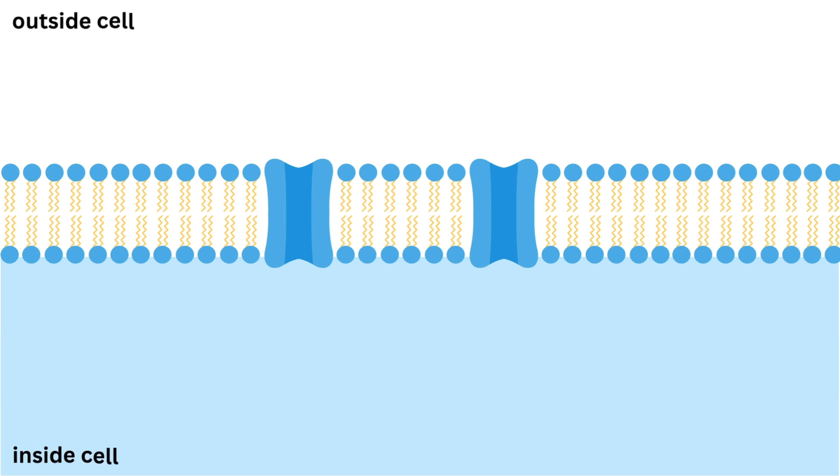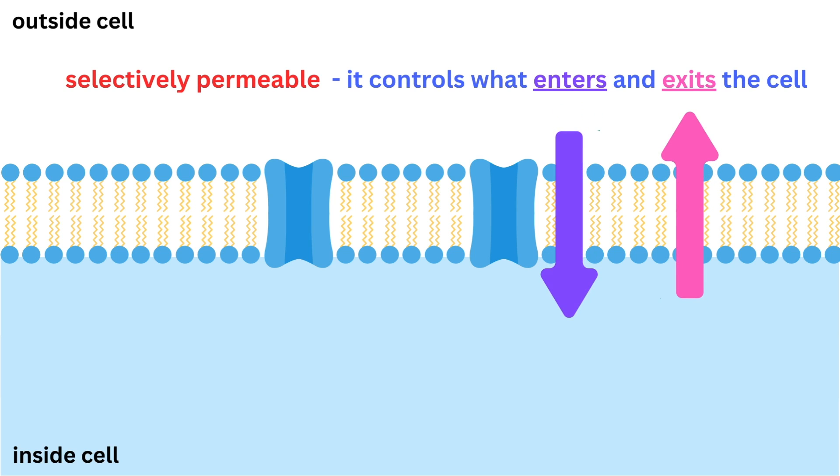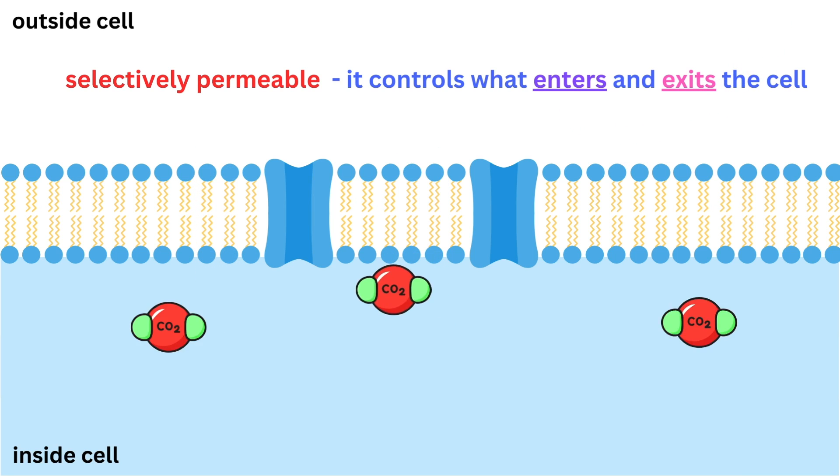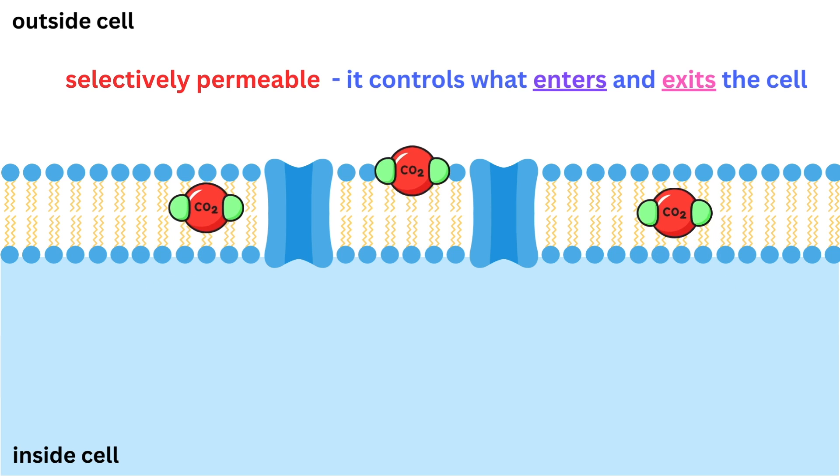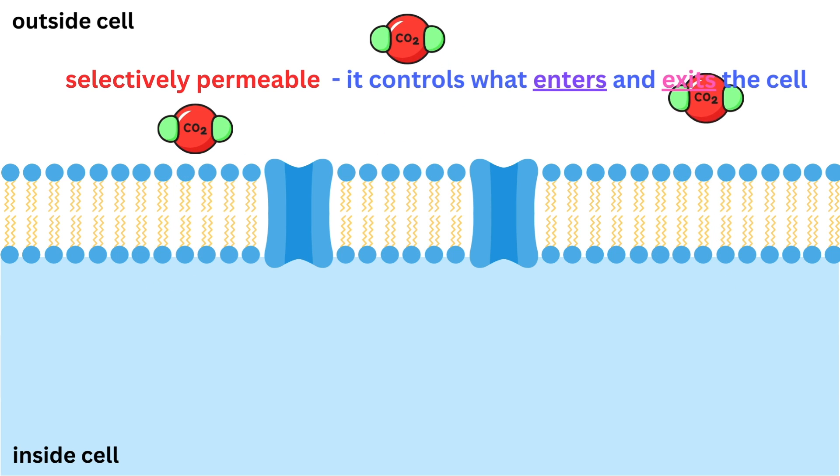But the cell membrane isn't just a wall. It's selectively permeable. This means it controls what enters and exits the cell. For example, it allows oxygen and nutrients to come in while keeping harmful substances out. It also lets waste products leave the cell so they don't build up and cause problems.